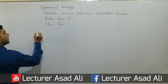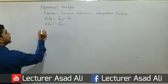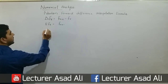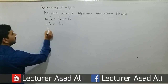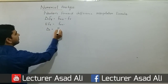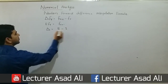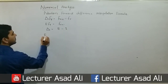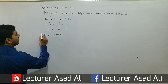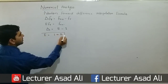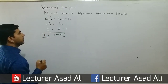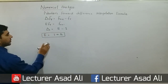Now we can discuss the relationship between operators. We know that delta = E - 1, so E = 1 + delta. According to this relationship, we can prove Newton's forward difference interpolation formula.